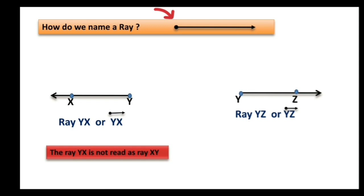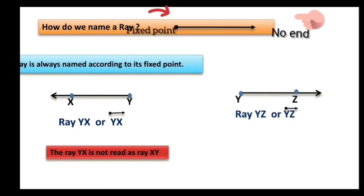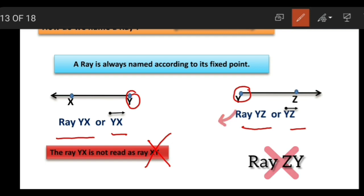Let us see how we name a ray. A ray is always named by its fixed point. In this figure, point Y is the fixed point, so we can write ray YX. We can call this ray as YZ. A ray can also be denoted by its symbol. Remember, ray YX cannot be written as ray XY. Ray YZ cannot be written as ray ZY. Today we have understood ray.